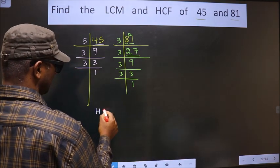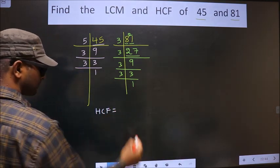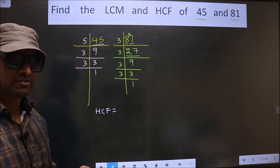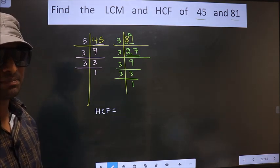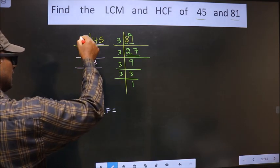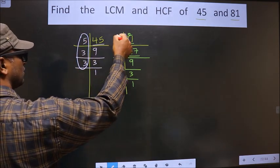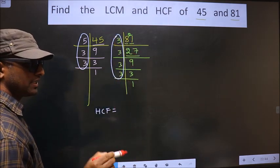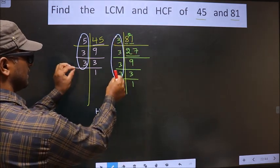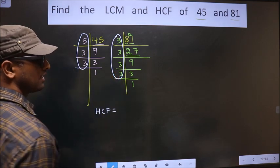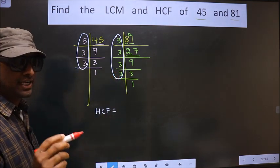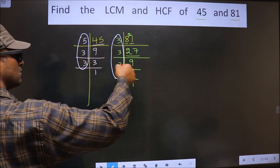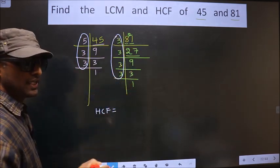So now our HCF is - HCF is the product of numbers that are present here and also here. So now we should find the numbers that are present in these two places. I repeat, we should find the numbers that are present here and also here. So let us find.